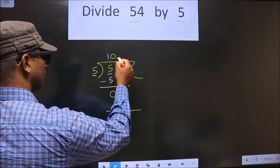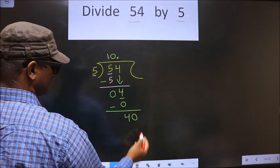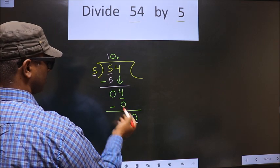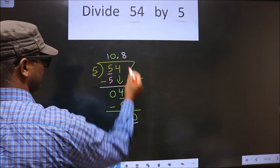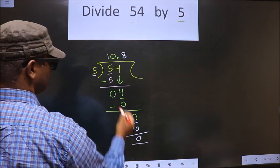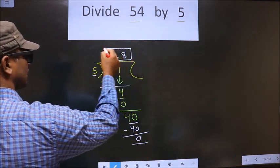So now you can put a decimal and take 0 here. Now here we have 40. When do we get 40 in the 5 table? 5 times 8 is 40. So you subtract, you get 0. This is our quotient.